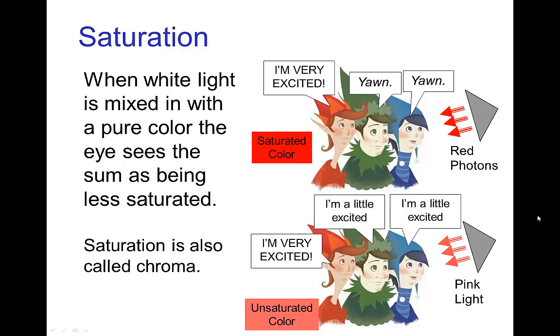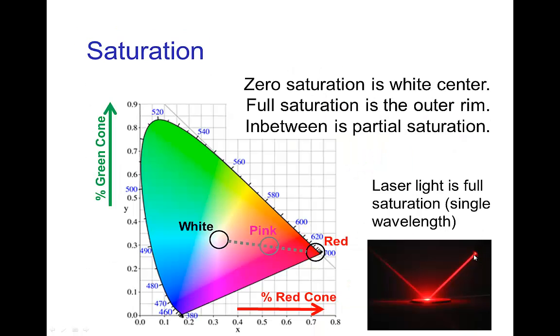Something like a laser which has photons that are all of one wavelength is highly saturated, but if we start adding white light mixed in with the red laser light, then the resulting light is pink and the more white we mix and the less red that we have, the closer we get to the center white point which is complete desaturation.